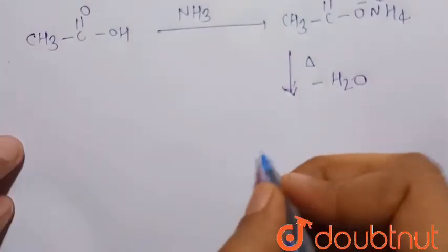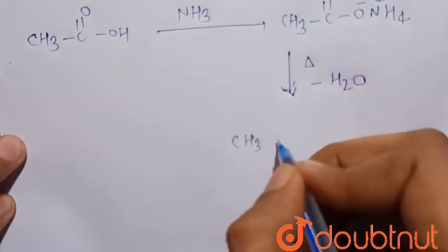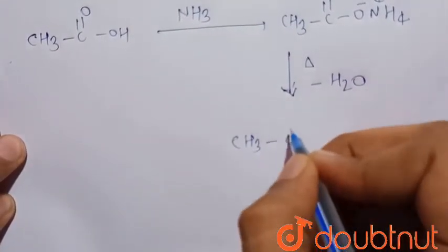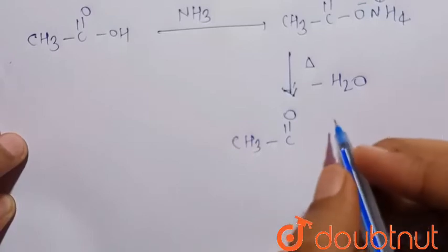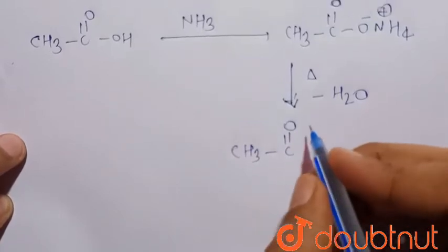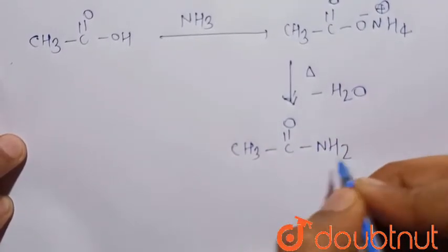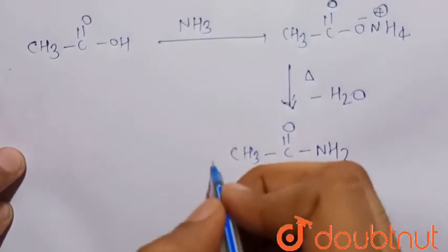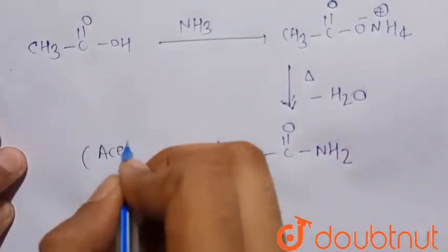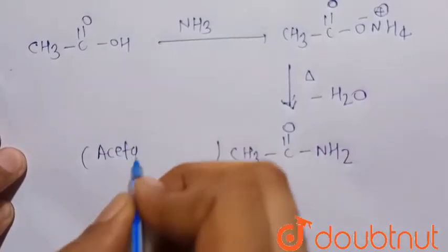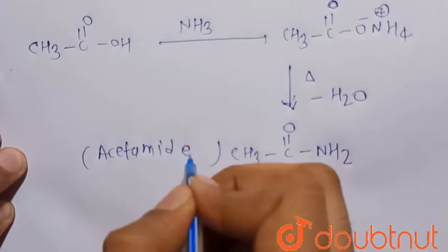So there is a formation of CH₃C(=O)NH₂. This is our desired product, that is acetamide — this is our required product.